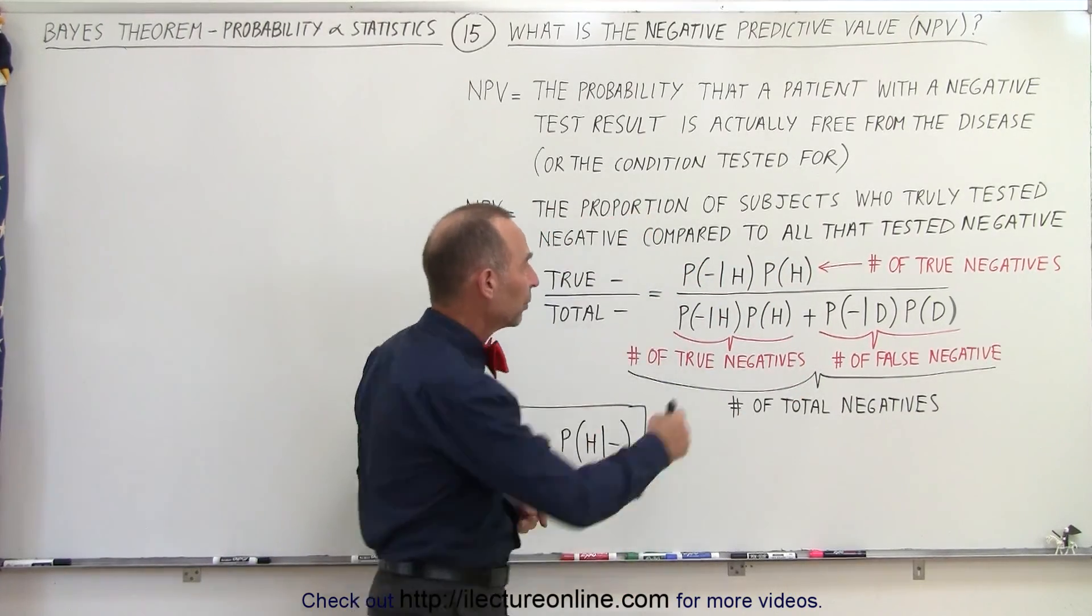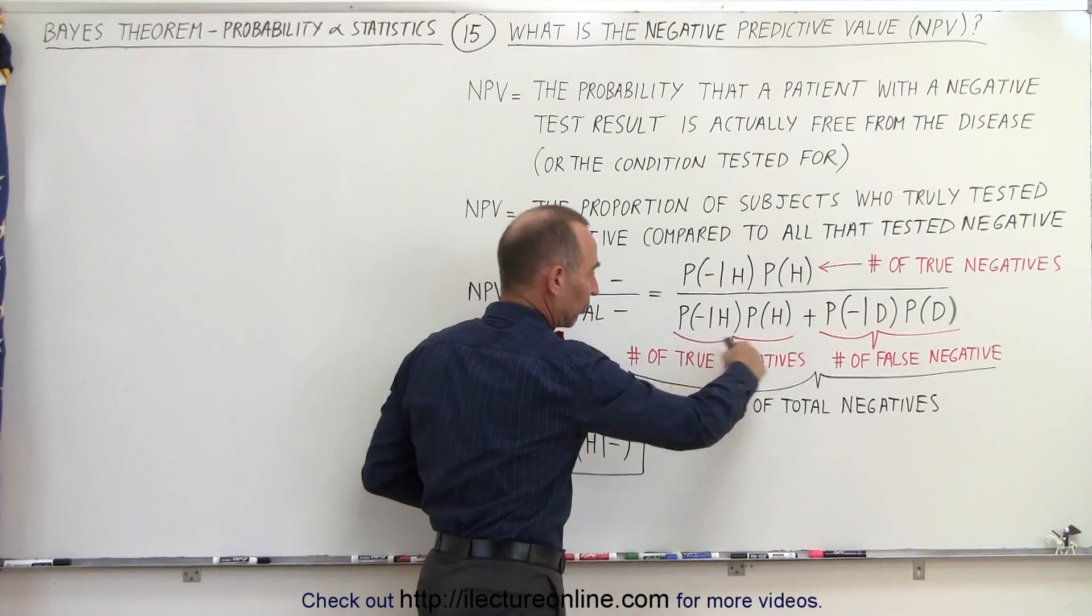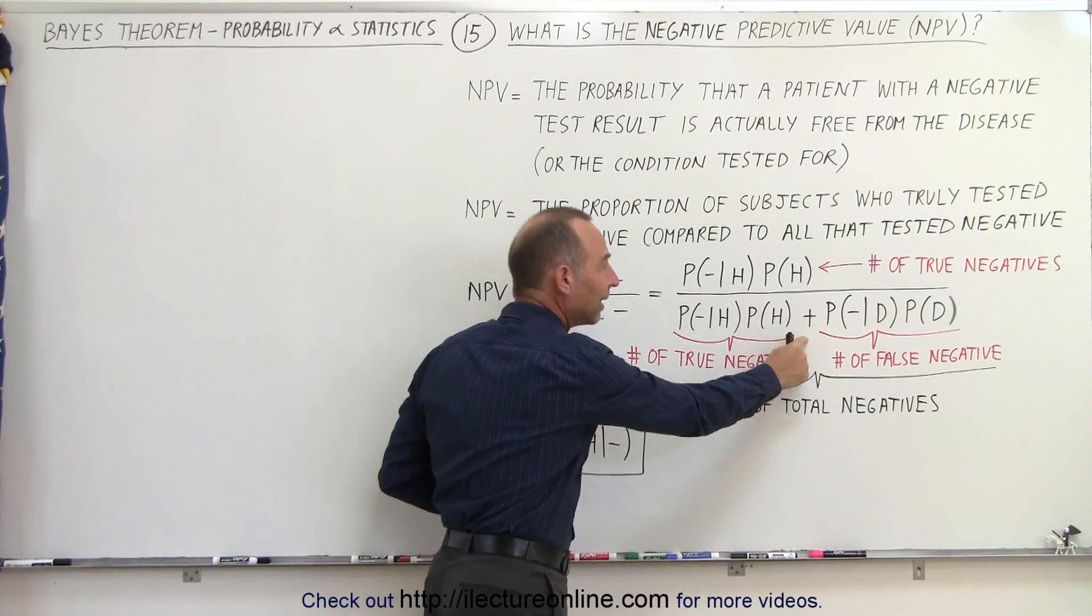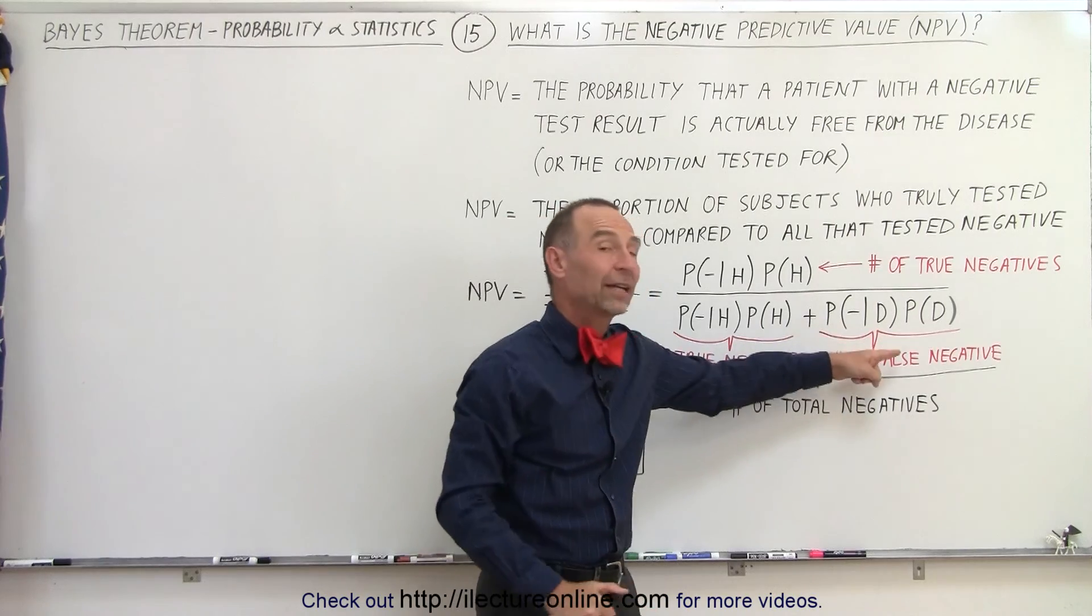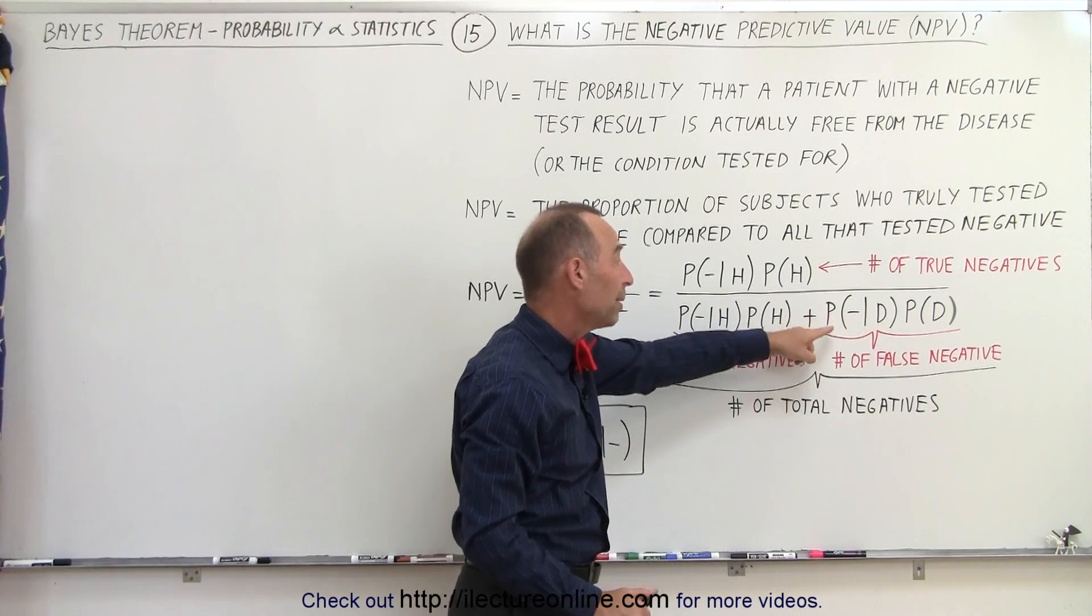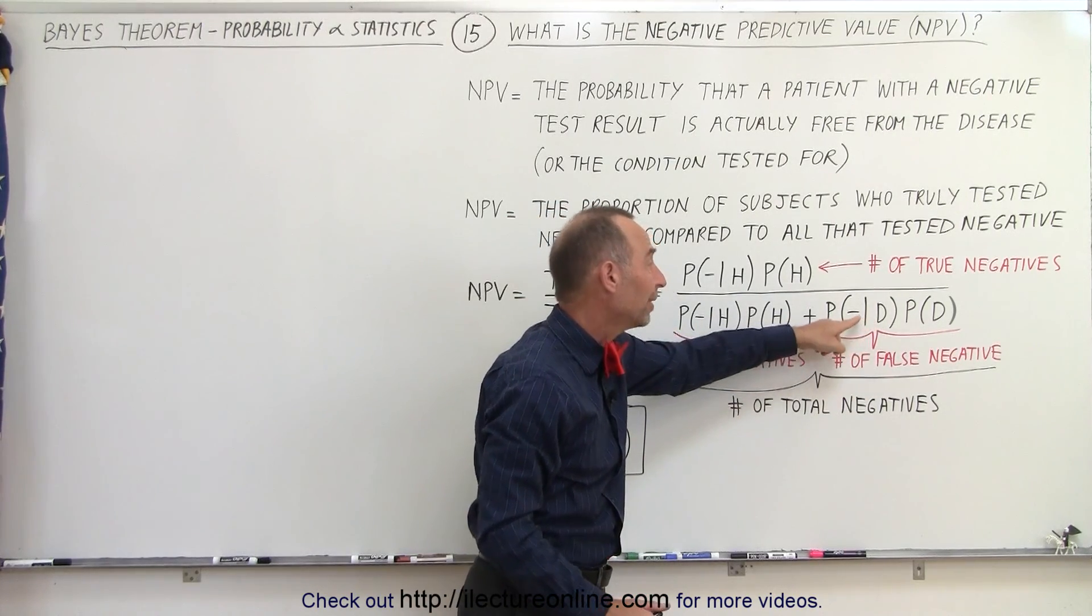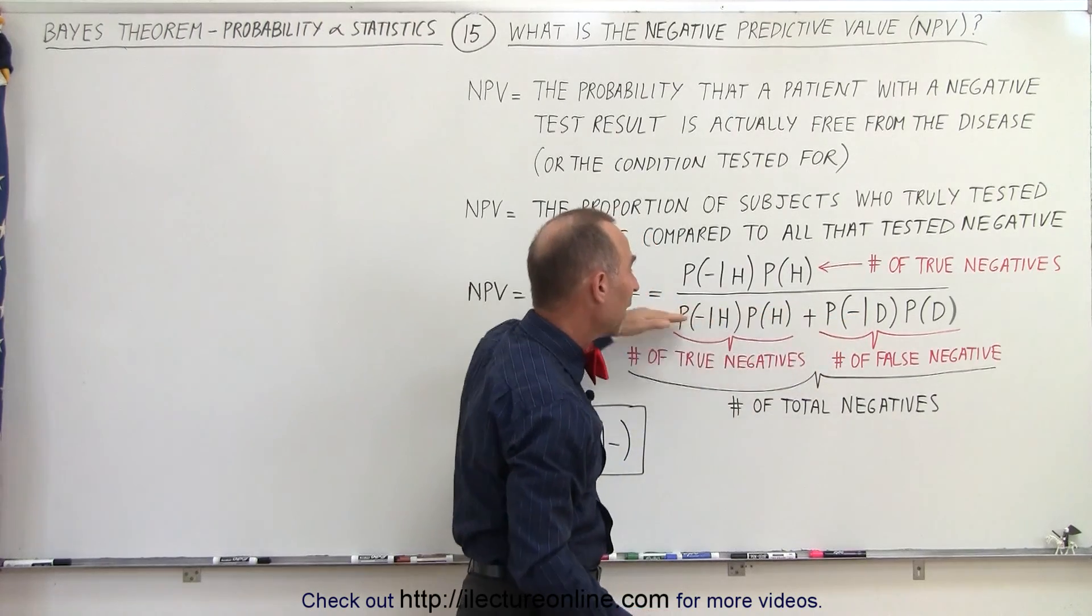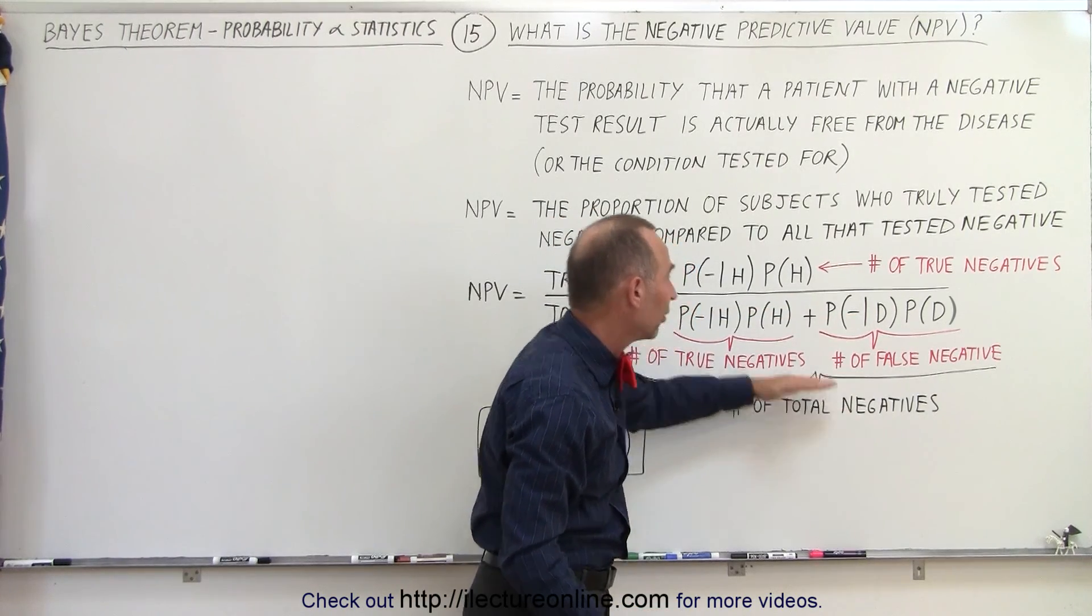In the denominator, we repeat all the true negative test results over here, but we add to that all the false negative test results. In other words, people who have the condition but test negative anyway. So the denominator represents the total negative test results.